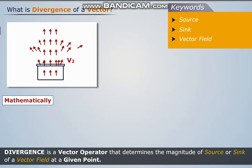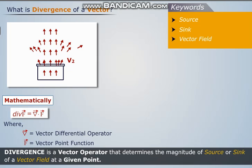Mathematically, divergence is expressed as div F = ∇·F, where ∇ is the vector differential operator and F is the vector point function.